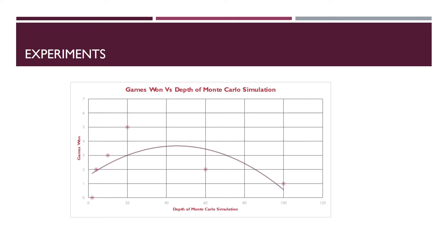This is an experiment we ran to determine what depth we should use for the Monte Carlo simulation. As we increase the depth, the agent wins more games, but after a depth of 40 the agent starts to lose. This is because after depth 40, the time condition imposed on us triggers and the agent starts to take random actions. So we should always use a depth of 40 to win the maximum number of games.